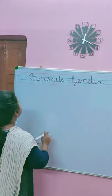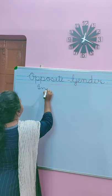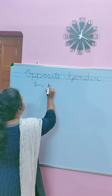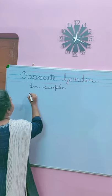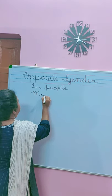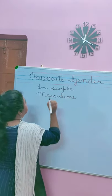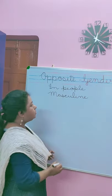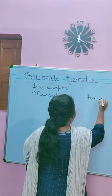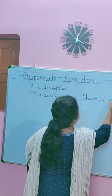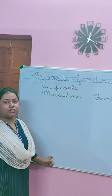So children, first I will teach you opposite gender in people. Masculine — M-A-S-C-U-L-I-N-E — that is male gender, and feminine — F-E-M-I-N-I-N-E — that is female gender. Okay?